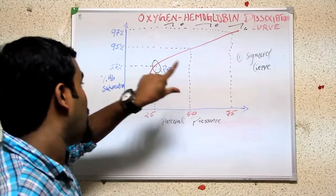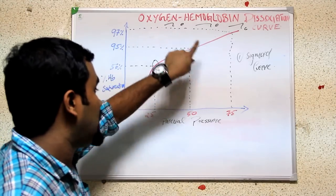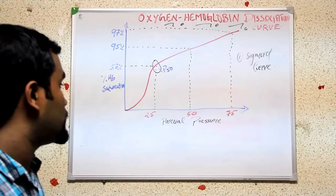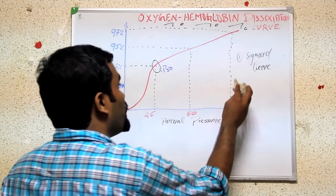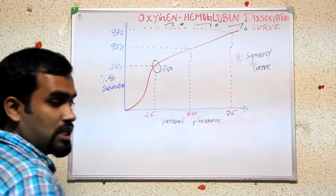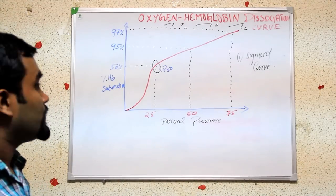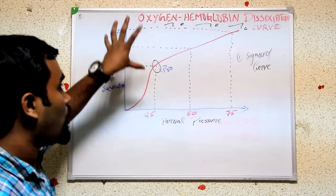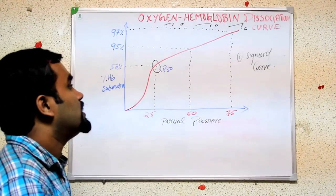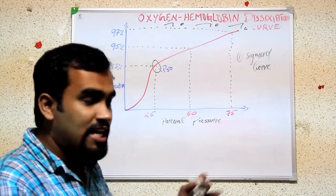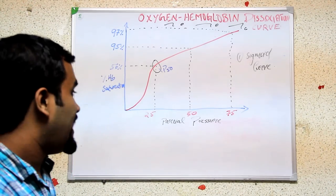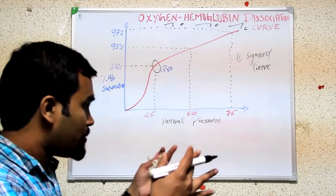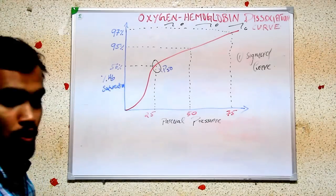In some MCQs and other exams, we will see questions about when the left shift takes place and when the right shift takes place. Left shift means the hemoglobin is associating with oxygen — they are binding with oxygen. Right shift means dissociation of oxygen, or in simple terms, oxygen is going away from hemoglobin.